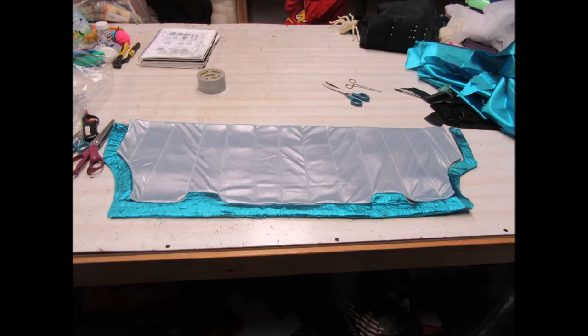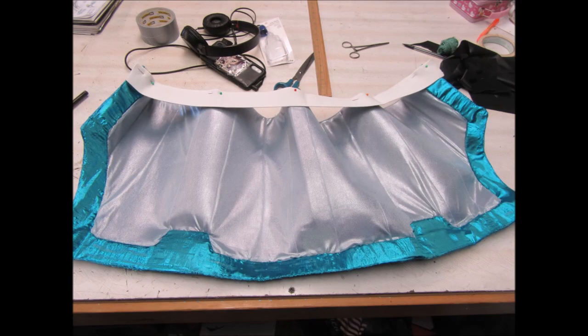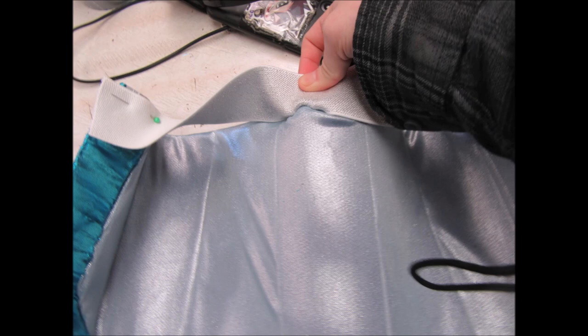Once that was turned, I fed the trim piece through it, cleaned it up, and pinned it onto the skirt. Then it was just a few hours of using my invisible stitch to attach it. After that, I attached a silver elastic waistband to the top of my skirt and seamed it up in front.